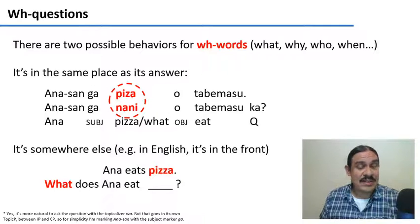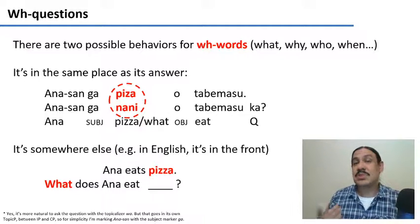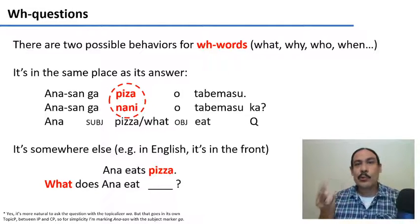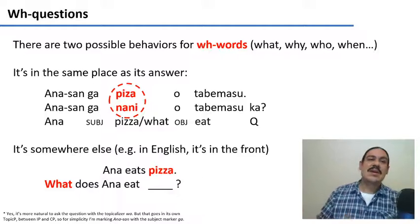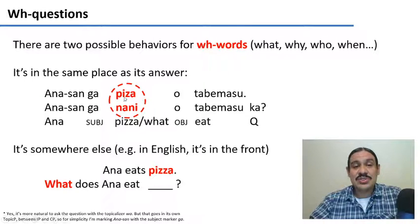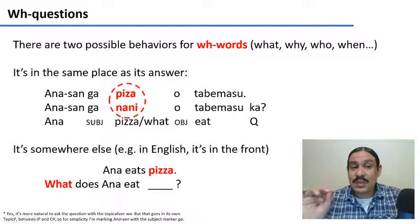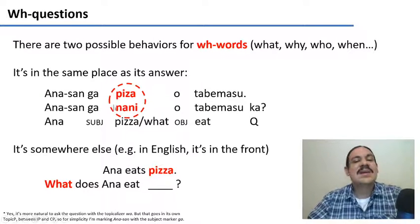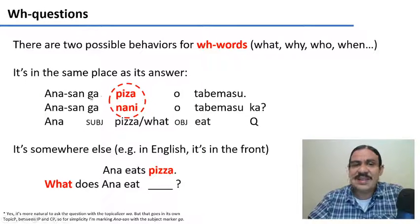There's another type of question that you can ask, which is a question with a WH word. WH words include 'what', 'why', 'who', 'when', and so forth. There are two ways that these questions can behave. In a language like Japanese, you can have the question and the answer in the same place. For example, the first sentence just means 'Anna eats pizza'. Ana-san-ga pizza-o tabemasu. 'Anna pizza eats'. The second one is the question. Ana-san-ga nani-o tabemasu-ka? 'Anna what eats?' So in here, 'Anna what eats', 'Anna pizza eats'. You can see that the question and the answer are in the same position.